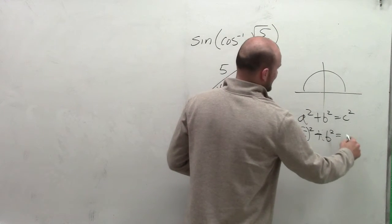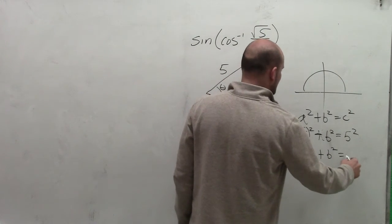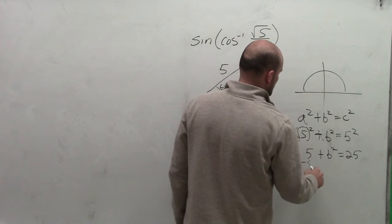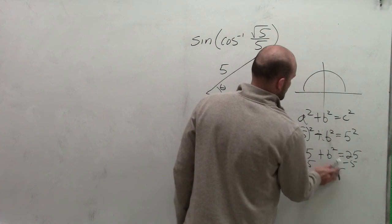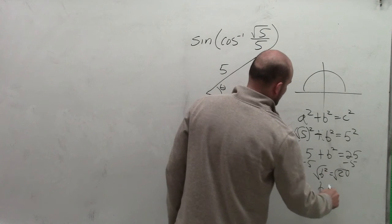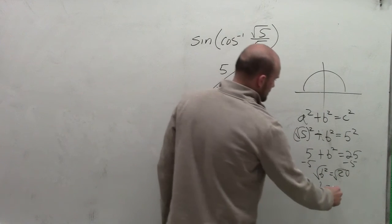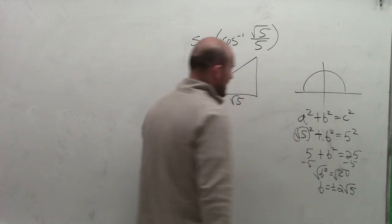Plus b squared equals 5 squared. So we have 5 plus b squared equals 25. Subtract 5, we get b squared equals 20. Therefore, b equals plus or minus 2 square root of 5.